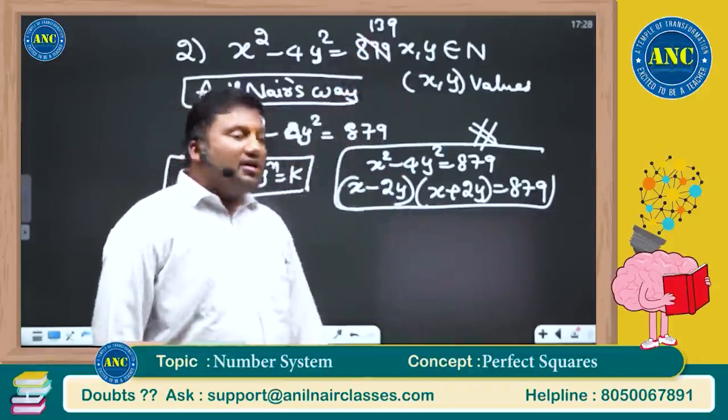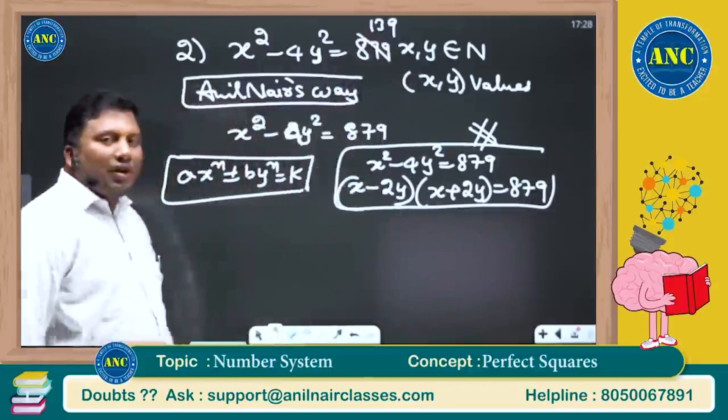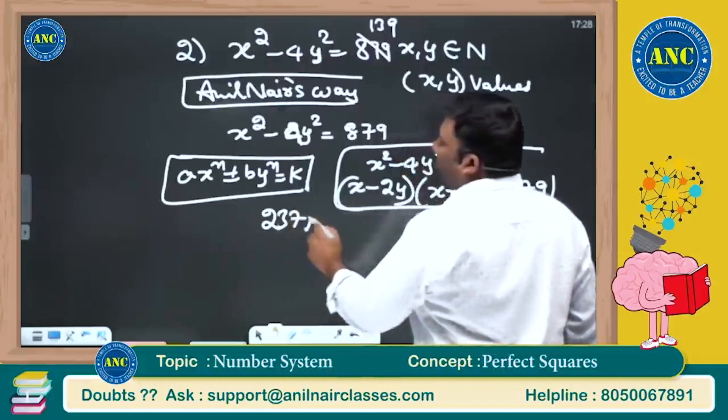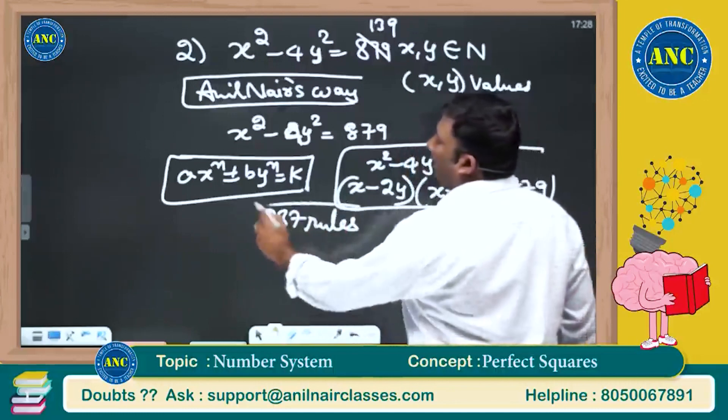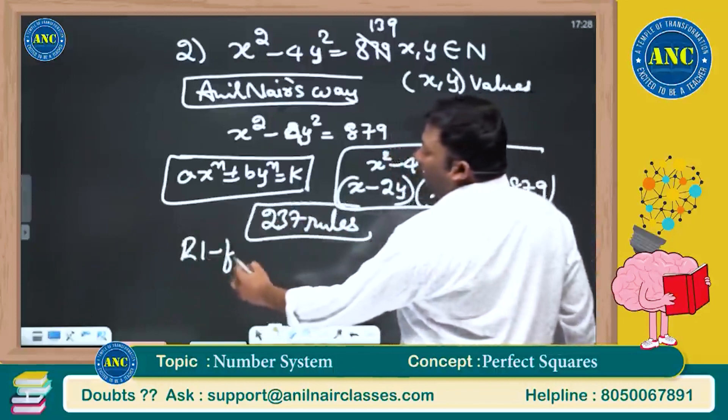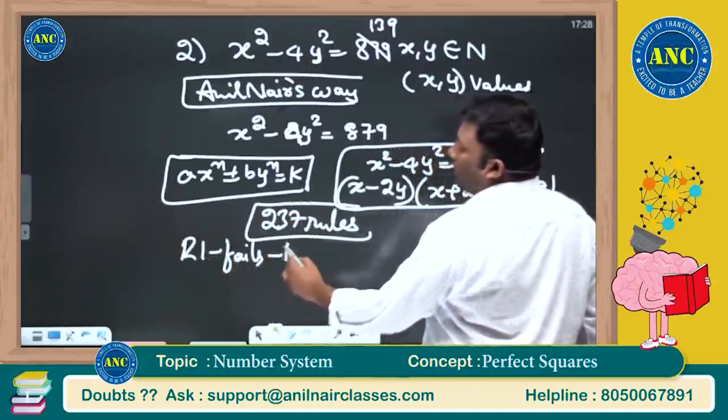How do you have to check whether a number is a prime number or not? Just for your curiosity, there are 237 rules to check whether a number is a prime number or a composite number. Apply rule number 1. If it fails, go to rule number 2.